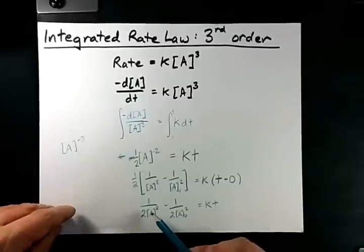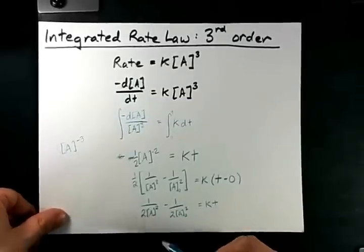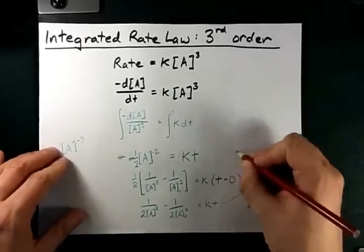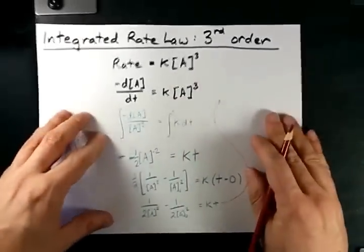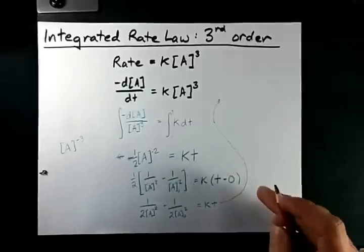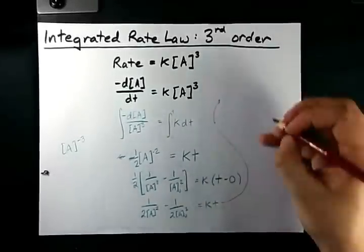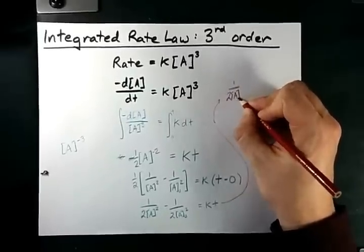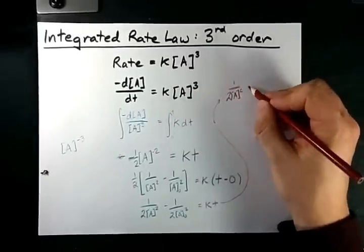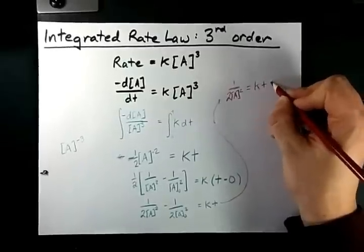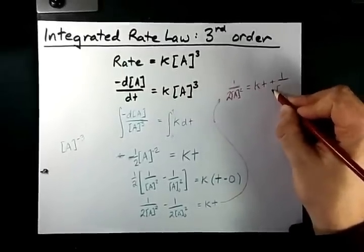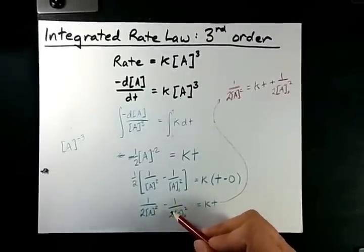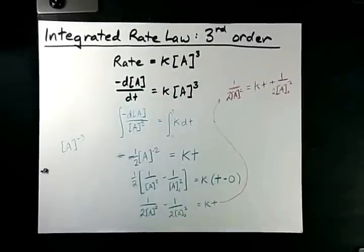Now, if we're going to play the game of isolating for the actual concentration, that's going to take a little more algebra. Let's deal with that up here so you don't have to lose this work that we did. All right, I've got a shaky table today. Anyways, 1 over 2 times the concentration at time t squared is then kt plus 1 over 2 times the initial concentration squared. That's just me moving this term over to the right-hand side.